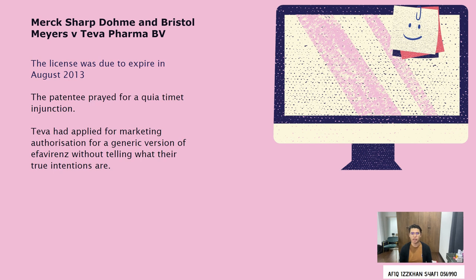Referring to the case of Merck Sharp & Dohme and Bristol-Myers against Teva Pharma BV, the claimant was a patentee of Efavirenz, a non-nucleoside reverse transcriptase inhibitor used in controlling HIV infections. The license was due to expire in August 2013, and the patentee prayed for a quia timet injunction in 2012, fearing that Teva, a generic manufacturer, would infringe its patent. The prayer was because in October 2011, Teva had applied for marketing authorisation for a generic version of Efavirenz, and when asked about its launch intentions, Teva refused to reveal anything, explaining that their plans were private.